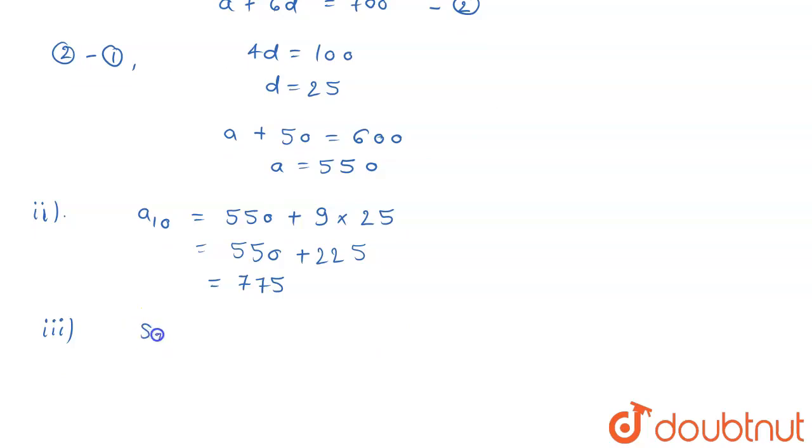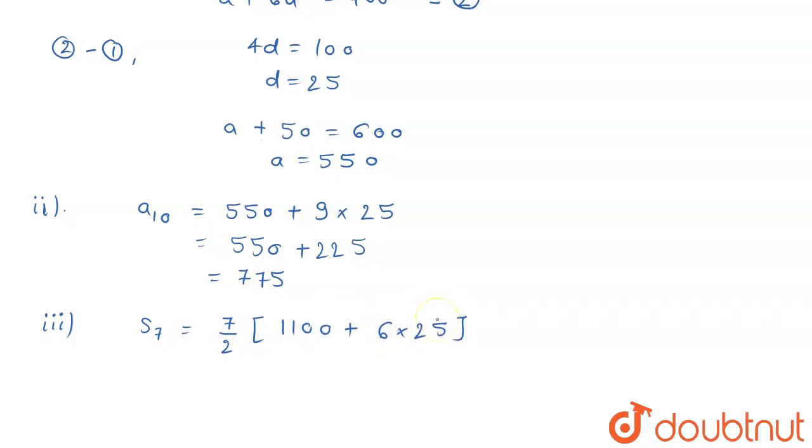So, it becomes (7/2) that is n by 2 into [2A which will be 1100 plus (n-1) is going to be 6 into D is 25].